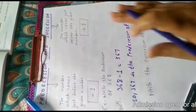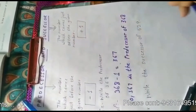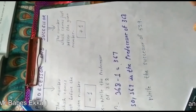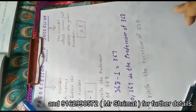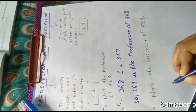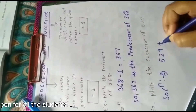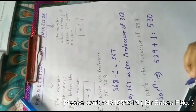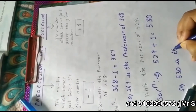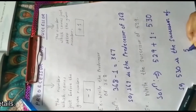In the same way, what do we mean by successor? The number which comes just after the given number — when we add one to the given number, we get the successor. So we have to add plus one. For example: write the successor of 529. In the solution, 529 plus 1 equals 530. So 530 is the successor of 529.